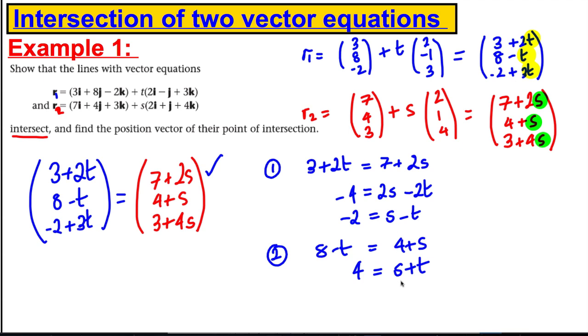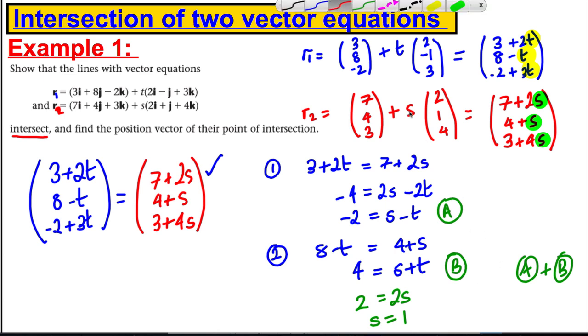Now I can get a third equation, but I only have two things to find out, so I only need two equations. So I might call this equation A, this equation B. What would happen if I added A to B? Well here I would get 2 equals 2s, and the t's would cancel. So s must be equal to 1. If s is equal to 1, I could substitute back in here or here, and t must be equal to 3. So I've got s is 1 and t is 3. I found those values.